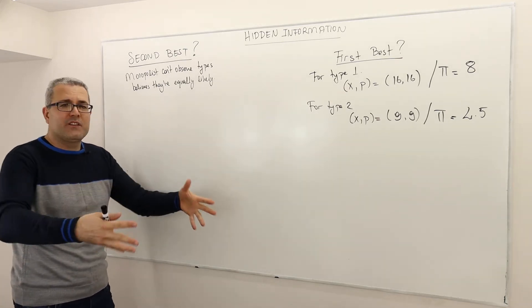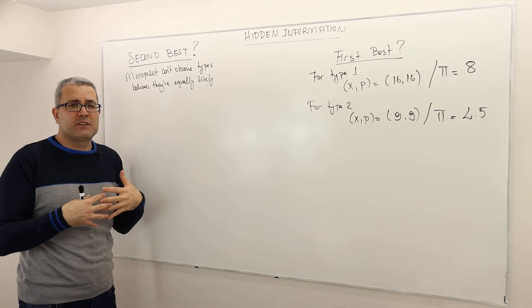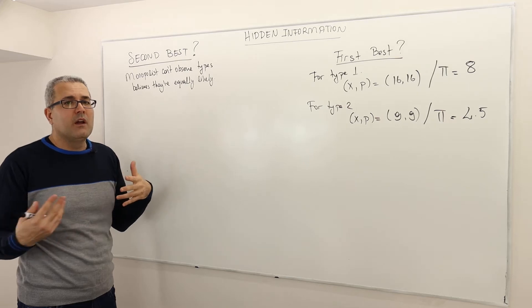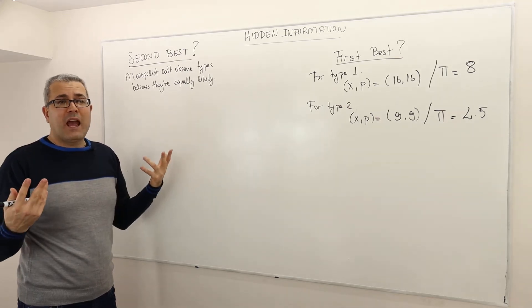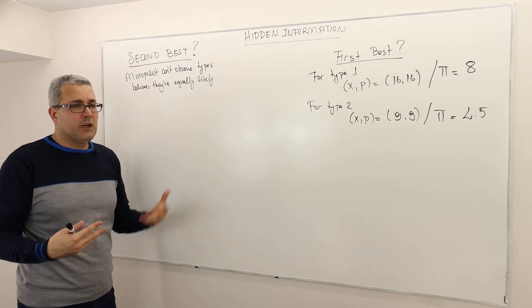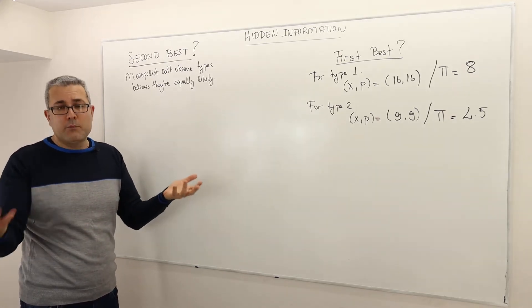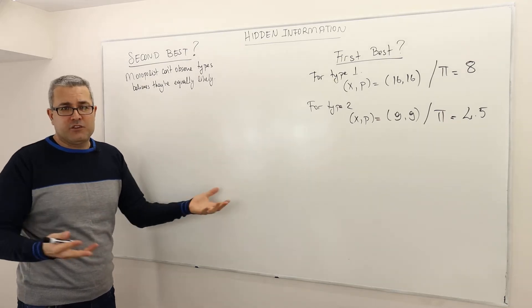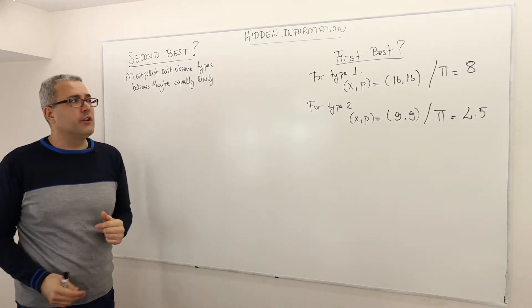So whenever a customer comes into the monopolist's store, the monopolist can't say whether it is the high type or low type. And so what happens is that the monopolist offers this customer probably two or maybe more packages - package one and package two.